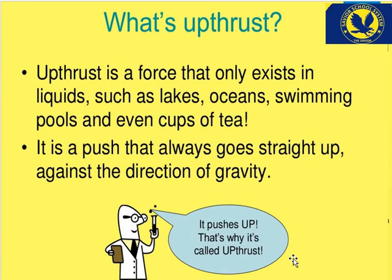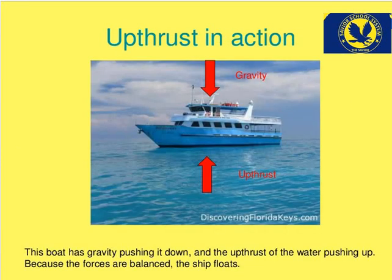So we call it up thrust force. Like if you keep a balloon in water, it will float — why does it happen? It is due to up thrust force. You can see here up thrust in action: gravity acts downward and up thrust force acts upward. This board has gravity pushing it down and the up thrust of the water pushing it up. Because the forces are balanced, the ship floats.